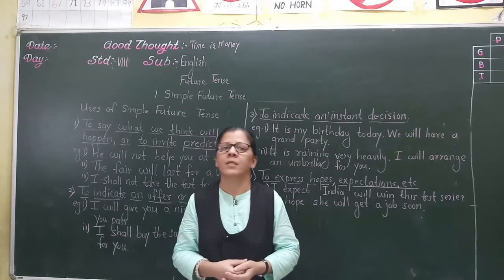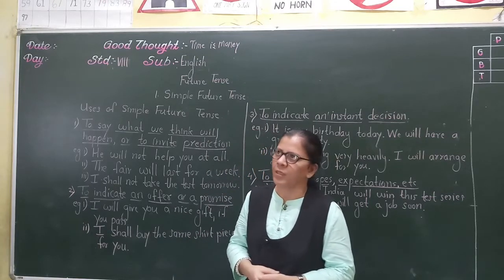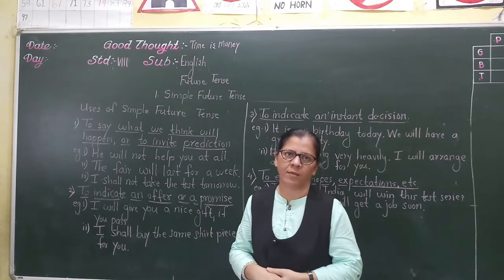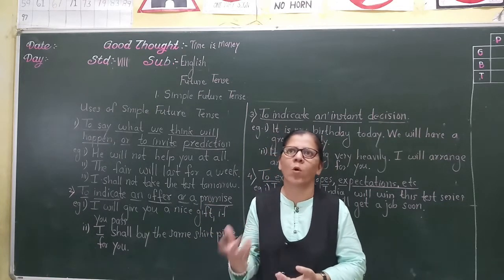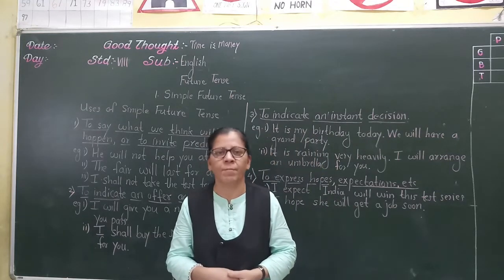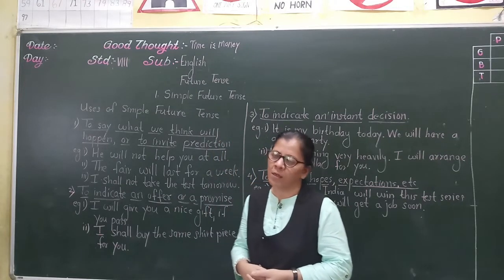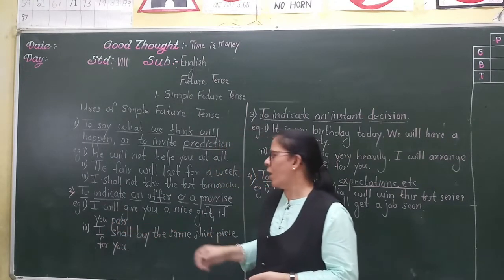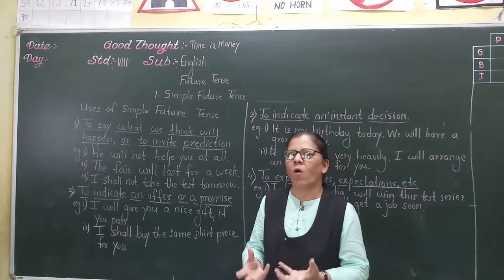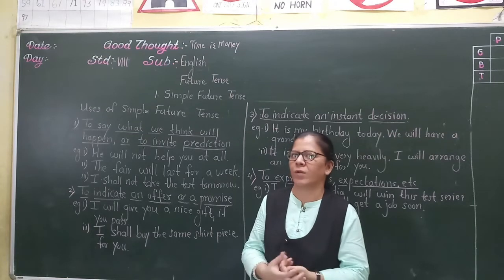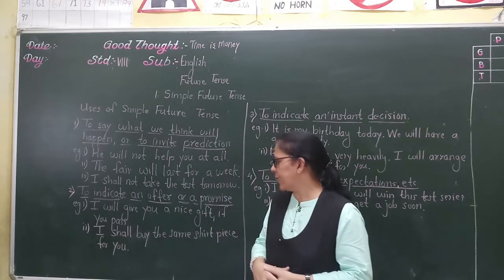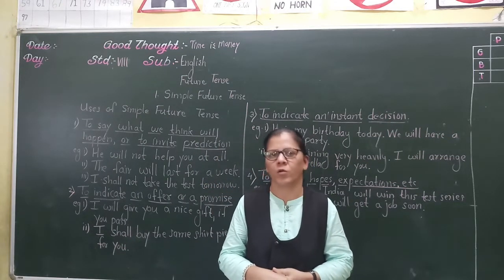The second use is to indicate an offer or a promise. If you want to offer something or if you make a promise, we use simple future tense. For example: 'I will give you a nice gift if you pass.' That is an offer or a promise. Next example: 'I shall buy the same shirt piece for you.' So to make an offer or promise we use simple future tense.